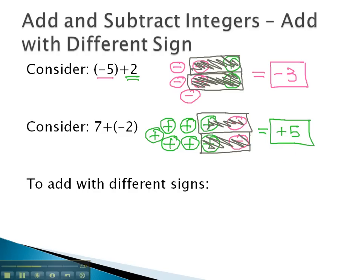This gives rise to our process to add with different signs: we will subtract the numbers and keep the sign of the larger absolute value.